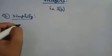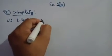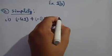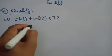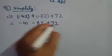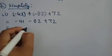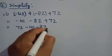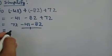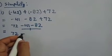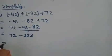Part 1: Add (minus 41) + (minus 82) + 72. First, open the brackets: minus 41, minus 82, plus 72. In the next step, note down the positive integer first, that is 72, then write all the negative integers. By rule number 1, like integers are added: minus 41 and minus 82 are like integers, so they add to give minus 123.